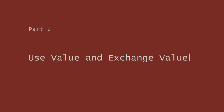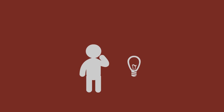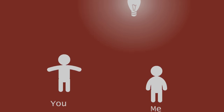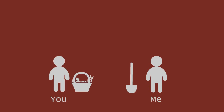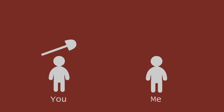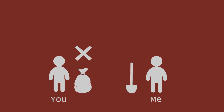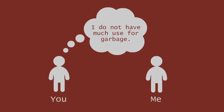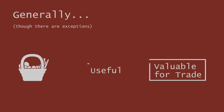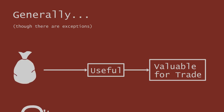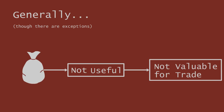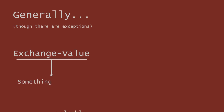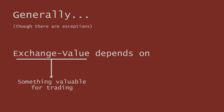Use Value and Exchange Value. Usually we find things valuable because they are useful. I could trade you a basket of food for a shovel, and this would make sense because you have a use for food and I have a use for a shovel. Exchanging your shovel for a bag of garbage would not make sense to you, because you do not have much use for garbage. So generally speaking, in order for something to be valuable for trade, it must be useful. Exchange Value — something valuable for trading — depends on Use Value, something valuable in its utility.